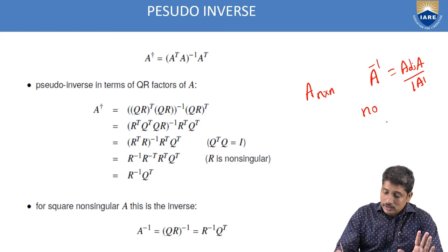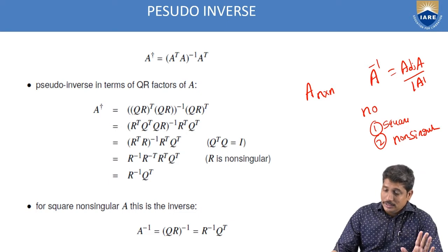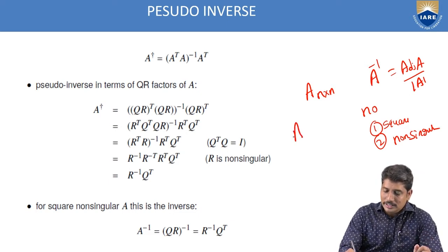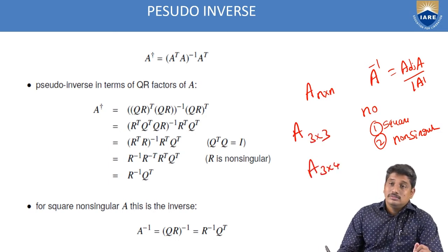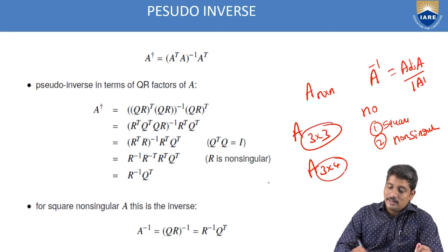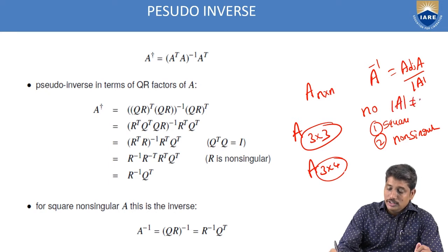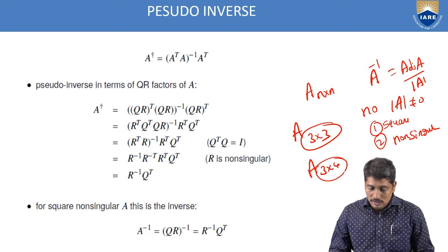A inverse exists only for square matrices that are also non-singular. That means A must be a square matrix — not a rectangular matrix like 3 by 4, but rather 3 by 3. The first criterion is that it must be square, and the second is that the determinant of A must be non-zero. If the determinant is zero, we cannot find the inverse.